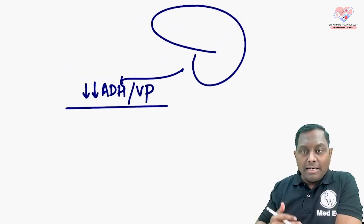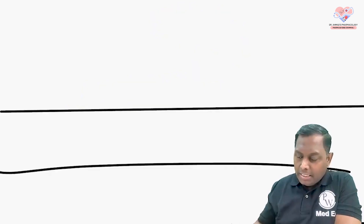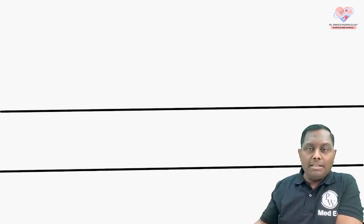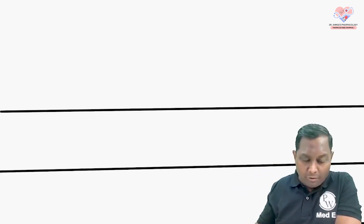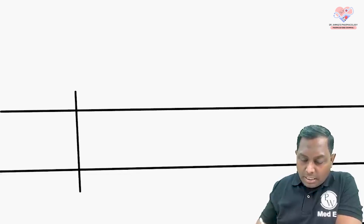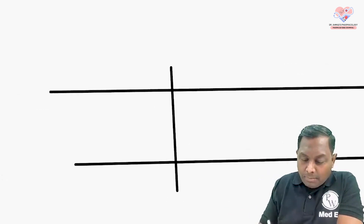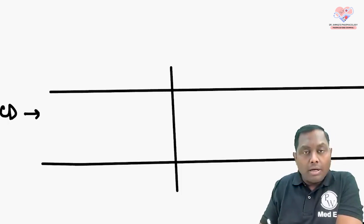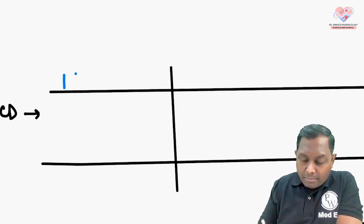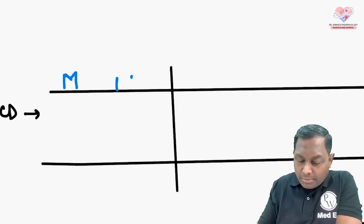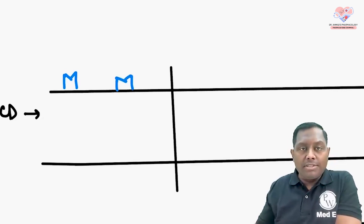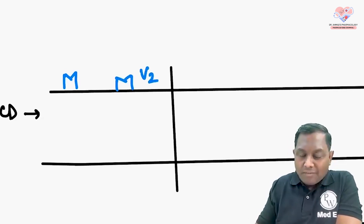What is the role of ADH? Let me give you a very conceptual image — this is one of my favorites. Imagine this is one segment of a collecting duct. In a normal scenario, on this segment of the collecting duct, we have some receptors — the name of these receptors is V2 receptor, that is vasopressin receptor.